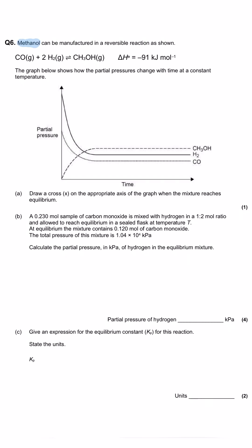Methanol can be manufactured in a reversible reaction as shown. Carbon monoxide reacts with hydrogen gas in a 1:2 ratio, producing methanol in a reversible reaction. The enthalpy change for this reaction is negative, which means it is exothermic.